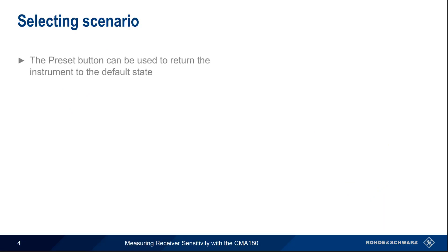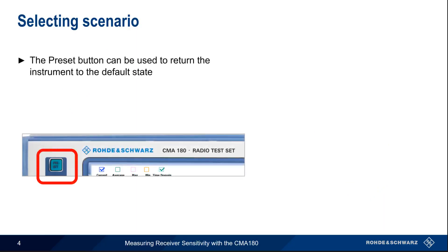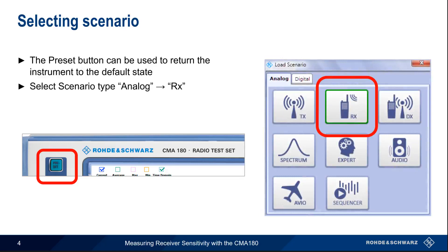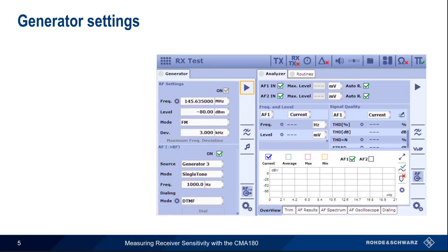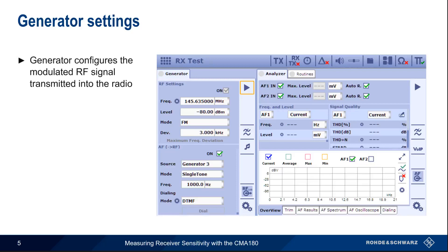If needed, the green preset button on the front of the CMA-180 can be used to return the instrument to its default state. Sensitivity is a receiver measurement, so we start by selecting Rx from the list of analog scenarios. For our sensitivity test, the CMA-180 needs to generate a modulated RF carrier that is input into the radio under test, and this is configured using the Generator tab.